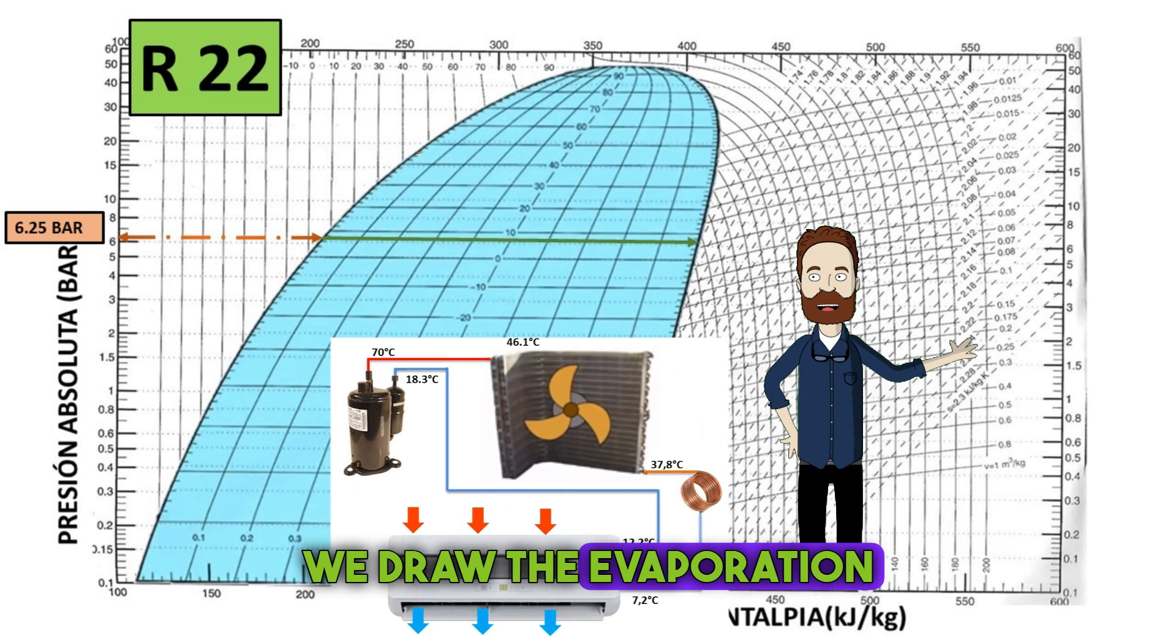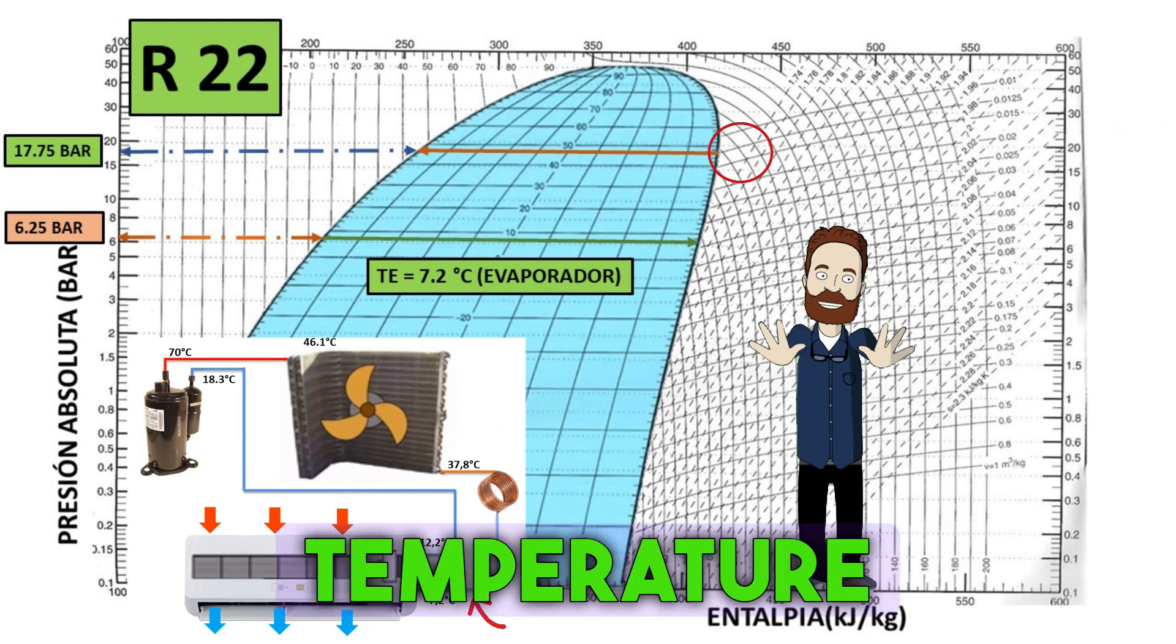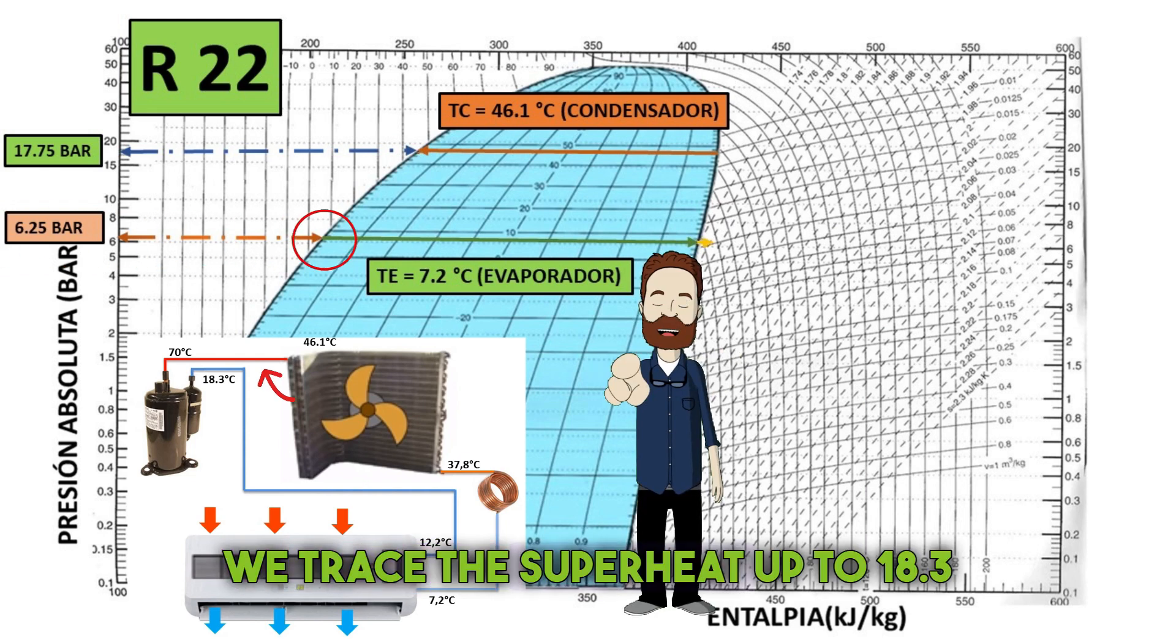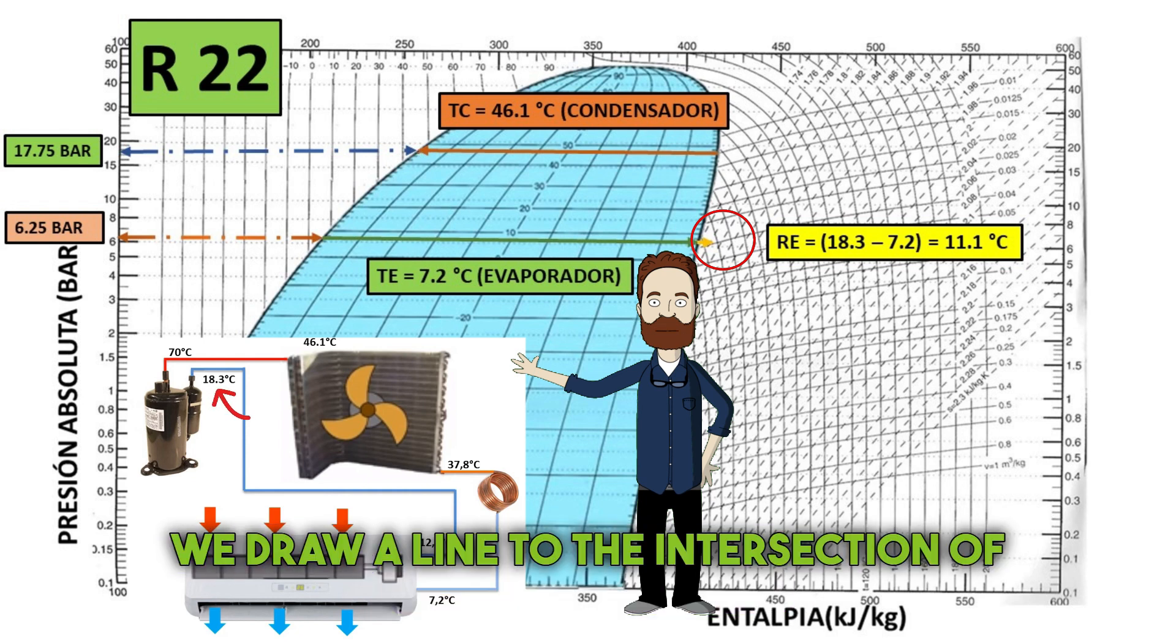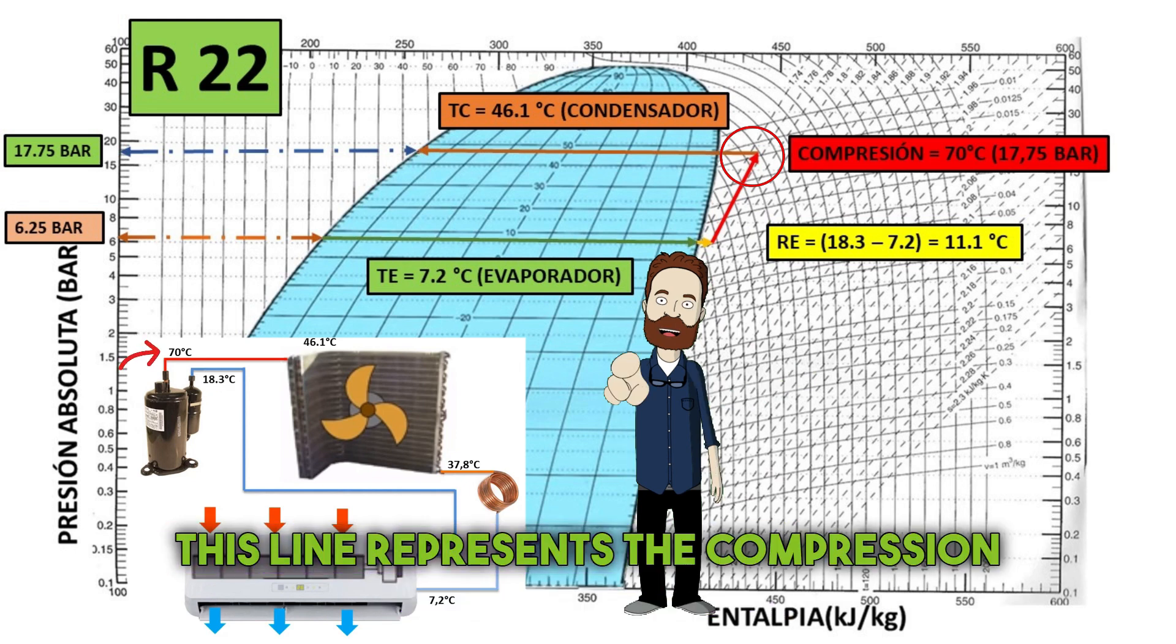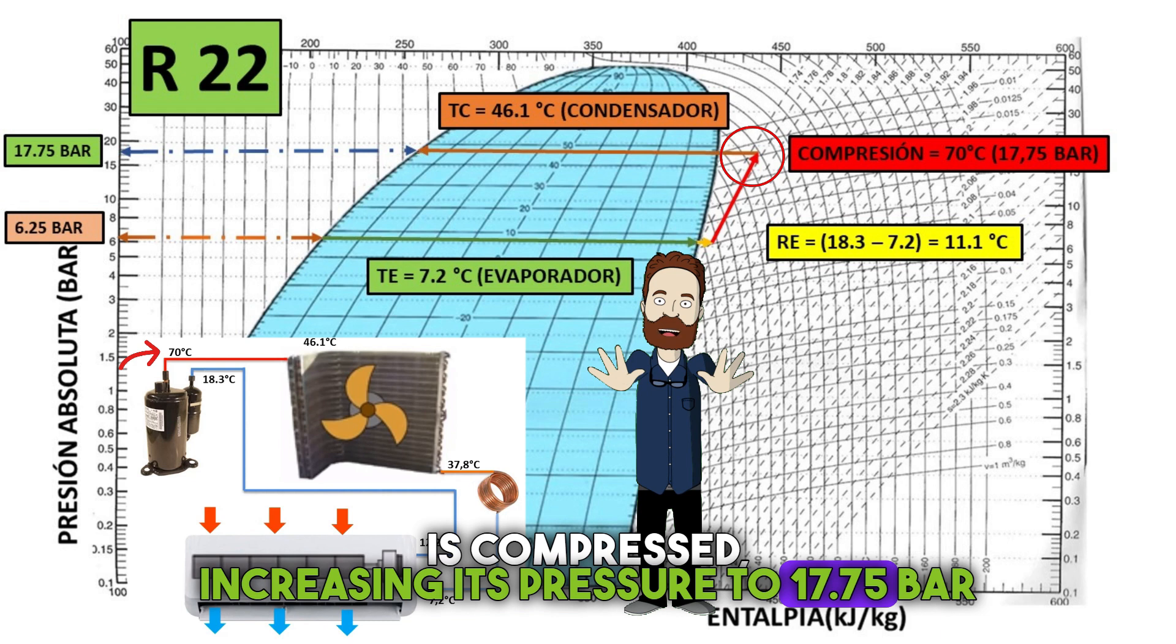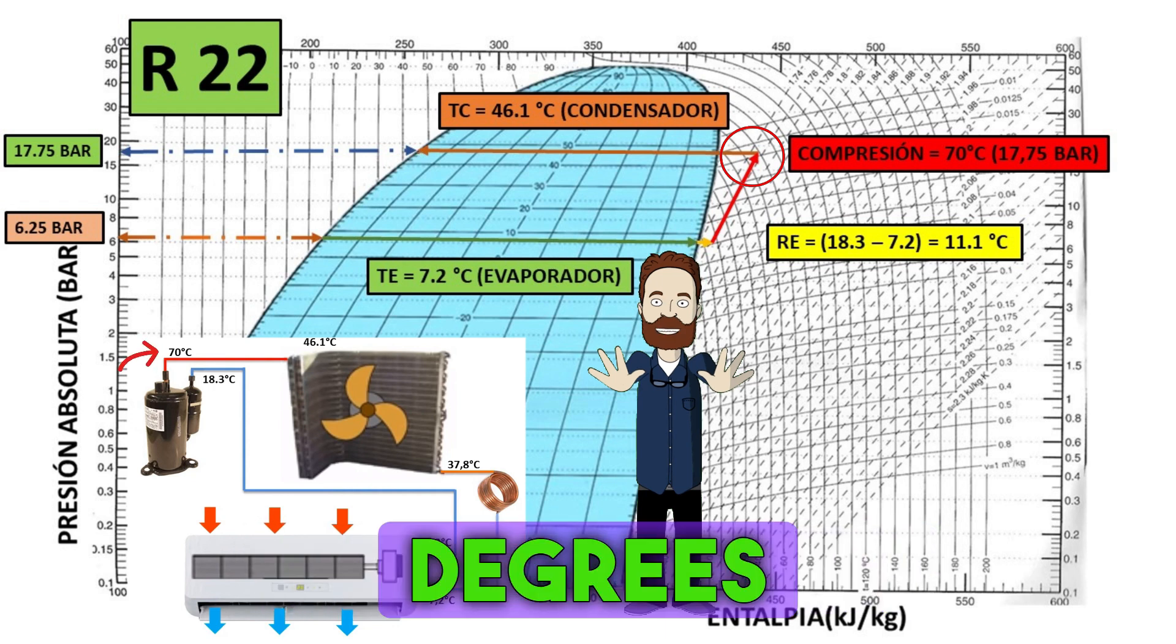We draw the evaporation temperature line at 7.2 degrees Celsius. Then we draw the condensation temperature line at 46.1 degrees Celsius. We trace the superheat up to 18.3 degrees. From 18.3 degrees, we draw a line to the intersection of the condensation line with the temperature of 70 degrees Celsius. This line represents the compression process, where the refrigerant gas is compressed, increasing its pressure to 17.75 bars or 257.4 psi absolute pressure, and its temperature to 70 degrees Celsius.